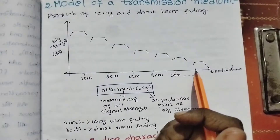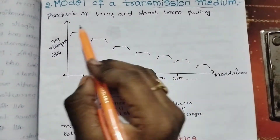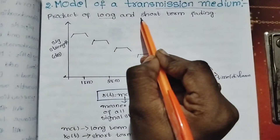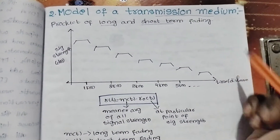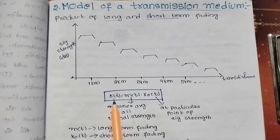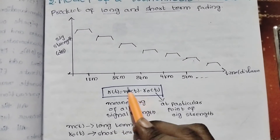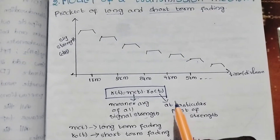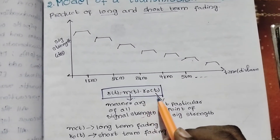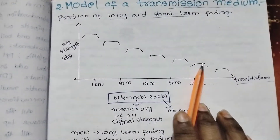Now the second step: the model of a transmission medium. The transmission medium formula is the product of long-term and short-term fading. R(T) is the transmission medium, equal to M(T) times r(T). M(T) means the mean average of all signal strengths at a particular point.